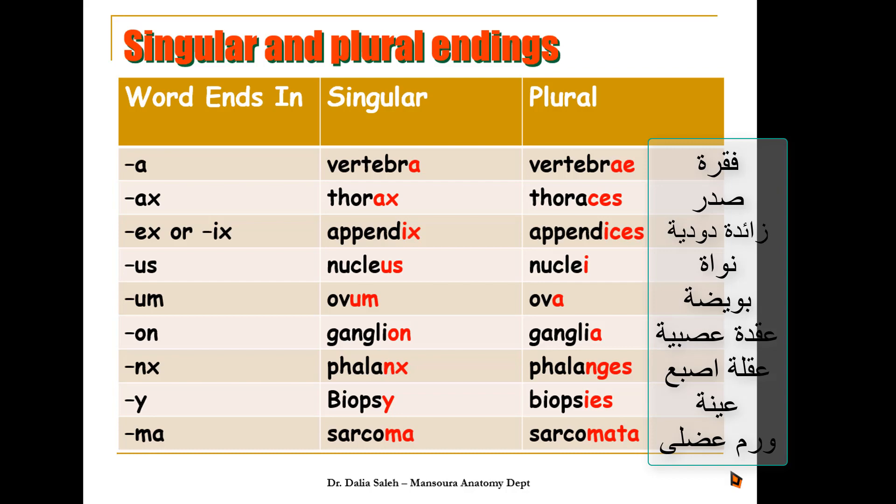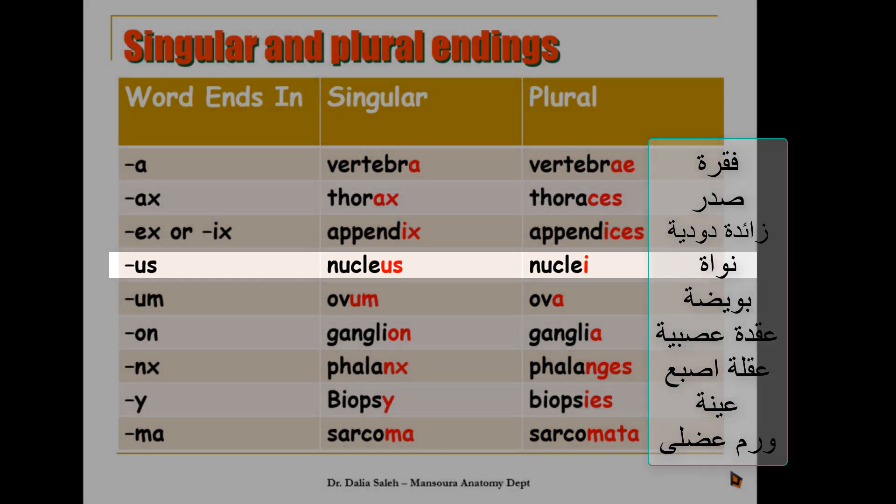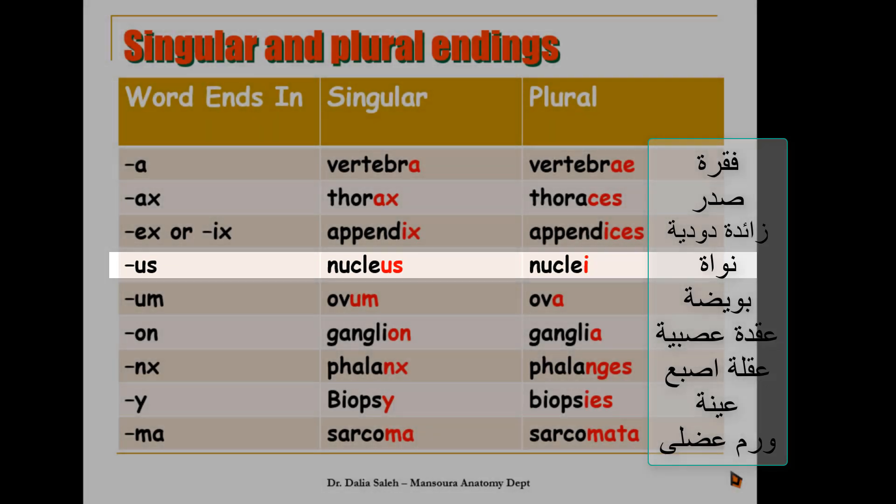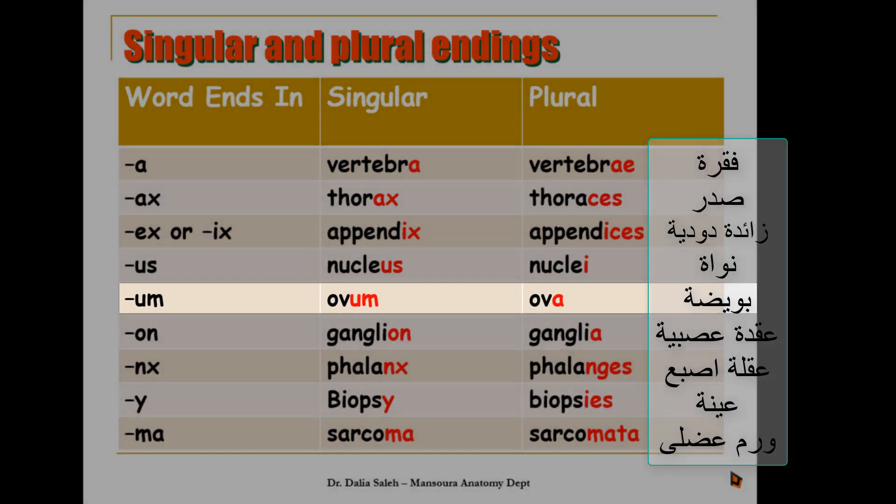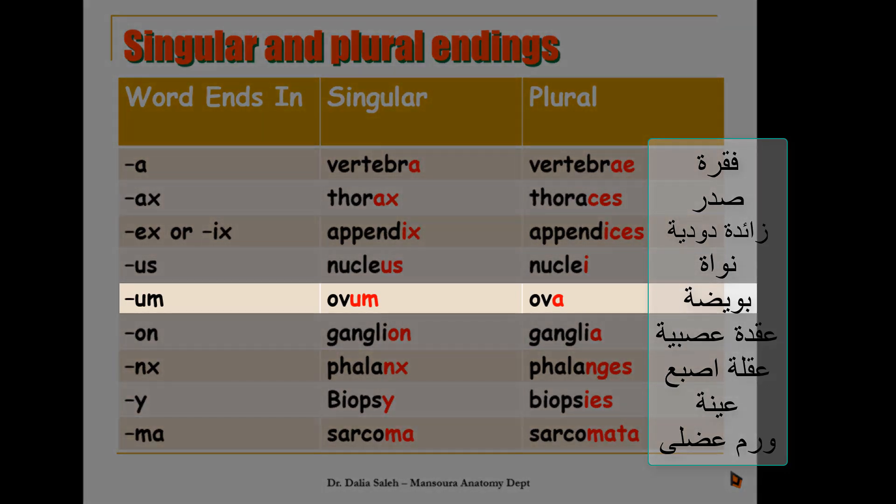Words that end in US, you change the US into I. So nucleus becomes nuclei. Words that end in UM, you change the UM to A. So ovum becomes ova.